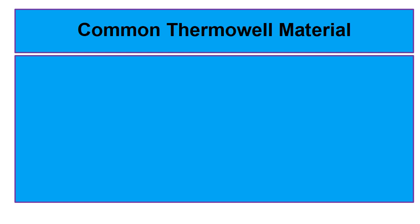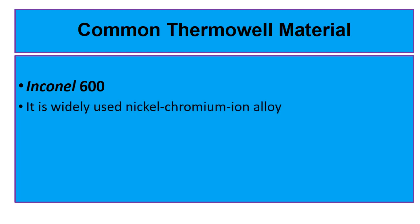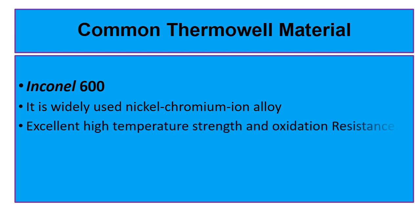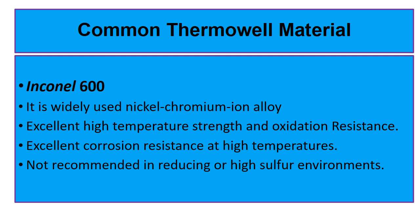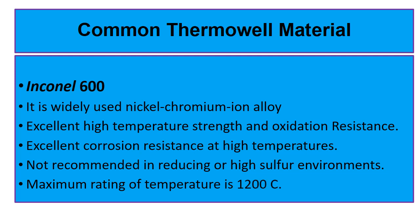The next material we are going to discuss is Inconel. Inconel has two grades. Inconel 600 is a widely used nickel-chromium-iron alloy with excellent high temperature strength and oxidation resistance. This alloy has excellent corrosion resistance at high temperature. It is not recommended for use in reducing or high sulfur environments. The maximum rated temperature is 1200 degrees centigrade.